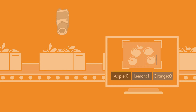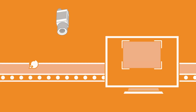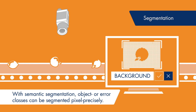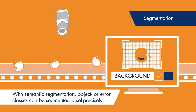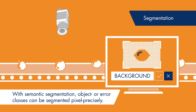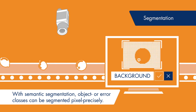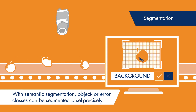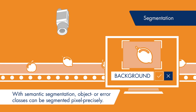With semantic segmentation, trained defect classes can be localized with pixel accuracy. This allows solving inspection tasks which previously could not be realized, or only with significant programming effort.